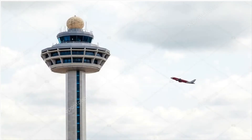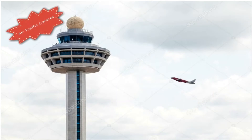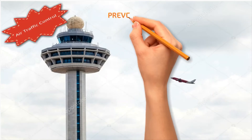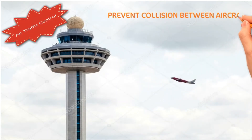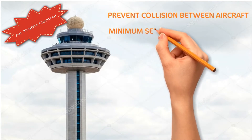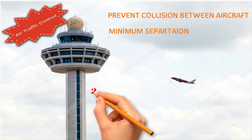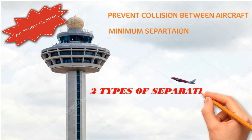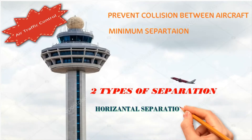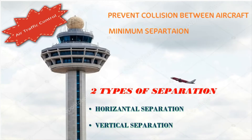Aviation is highly sensitive to safety. One of the primary objectives of an air traffic controller is to prevent collision between aircraft. This objective is achieved by ensuring that there is always a minimum separation between two aircraft. Every aircraft is separated from other aircraft by a set minimum separation. Primarily there are two types of separations: horizontal separation and vertical separation. In this video, let us understand the basic principles of vertical separation.